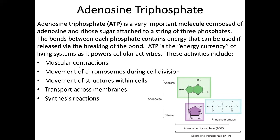ATP powers things like muscular contractions, movement of chromosomes during cell division, movement of structures inside the cell, transport across plasma membranes, and synthesis reactions — anabolic reactions require ATP. When that third phosphate is transferred and the energy is released, we go from ATP to ADP — adenosine diphosphate.